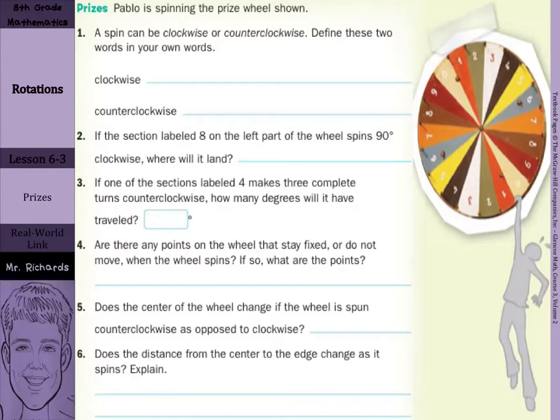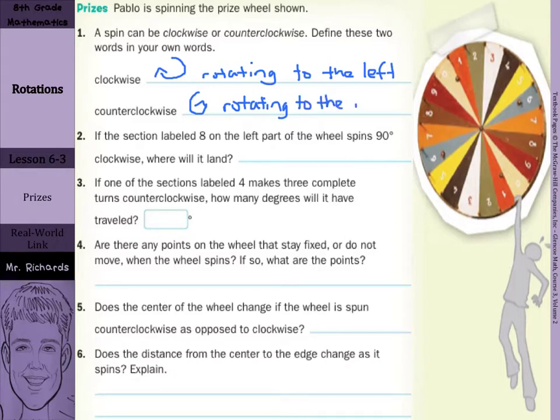Well, first for clockwise, clockwise is in this type of direction. So I would say we're rotating to the left as we're going clockwise. Counterclockwise is the opposite of that. It's going this type of direction. So I would say we are rotating to the right.